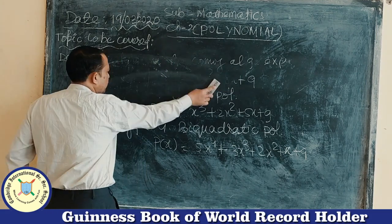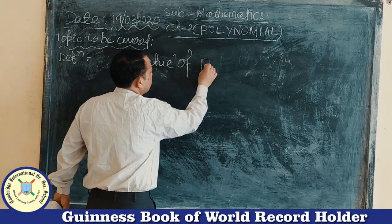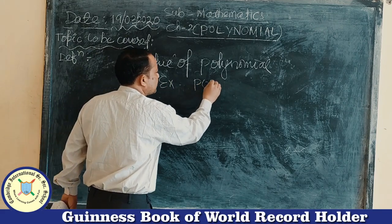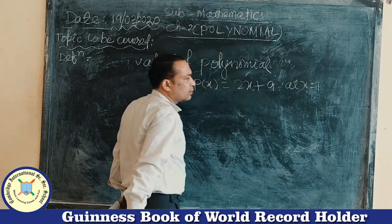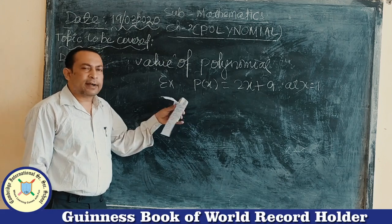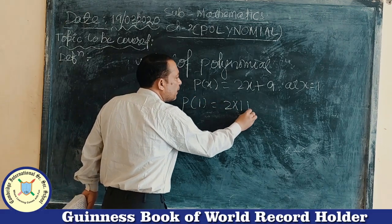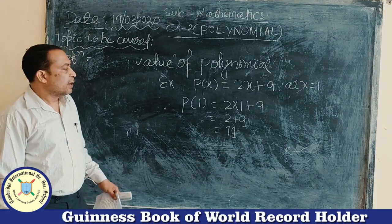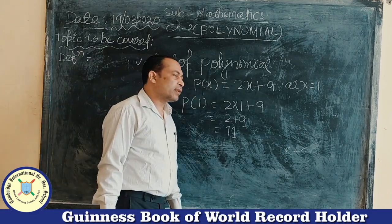Next, come to the value of the polynomial. For example, find the value of the polynomial P(x) = 2x + 9 at x = 1. If we put the value of the variable x, the result we get is the value of the polynomial. So P(1) = 2×1 + 9 = 2 + 9 = 11. This is called the value of the polynomial P(x) = 2x + 9 at x = 1.